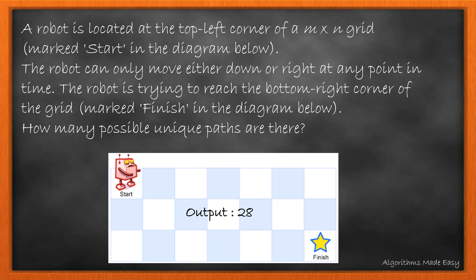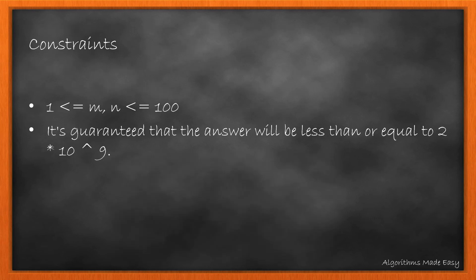Consider the diagram below. A robot is located at the top left corner of an m cross n grid marked start. It can only move either down or right at any point in time. The robot is trying to reach the bottom right corner of the grid marked finish. We need to find how many possible unique paths there are. m and n are between 1 and 100, and it's guaranteed that the answer will be less than or equal to 2 into 10 raised to 9.